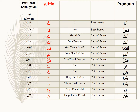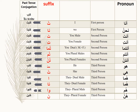Let's do another example. For the verb kataba — to write: Ana katabtu, nahnu katabna, anta katabta, anti katabti, antuma katabtuma, antum katabtum, antunna katabtunna, huwa kataba — remember, no letters, just the short vowel fatha — hiya katabat, huma (male) kataba, huma (female) katabata, hum katabu — don't pronounce the alif — hunna katabna.